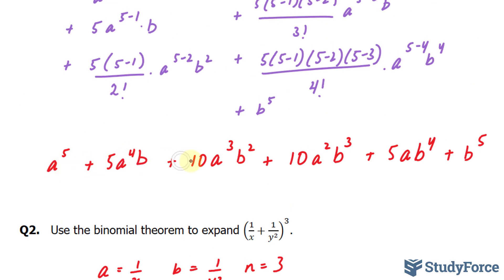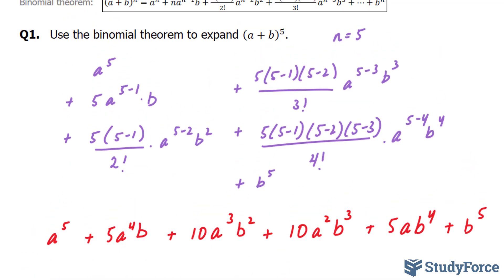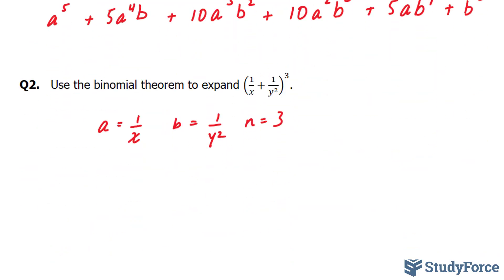We ended up with one, two, three, four, five, six terms in question one, and remember that our n was five. So the number of terms you should end up with in question two should be one more than your n value, which is four. So expect that.